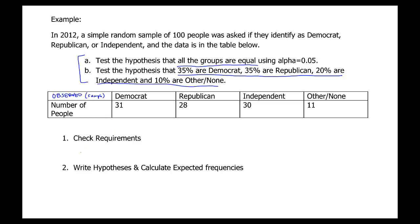The first thing we're going to do is check requirements. We need a random sample — and it says that in the problem. We need values of x in different categories, and we have numbers of people who answered for each possible political affiliation. We need expected values to be greater than five for each category — we don't have expected values yet, so we'll come back and check that one after we figure out our expected values.